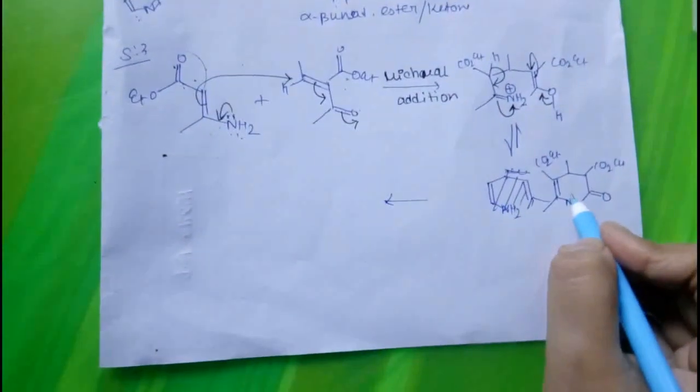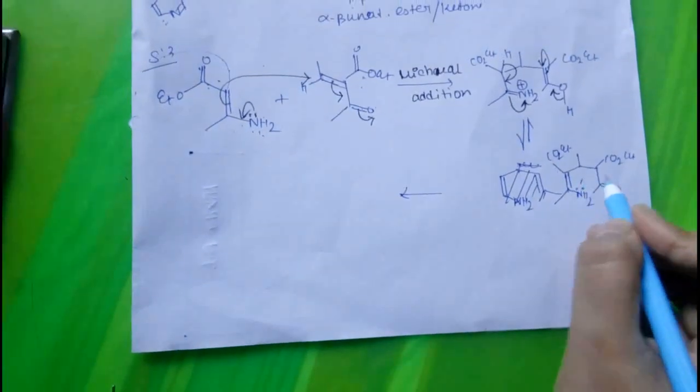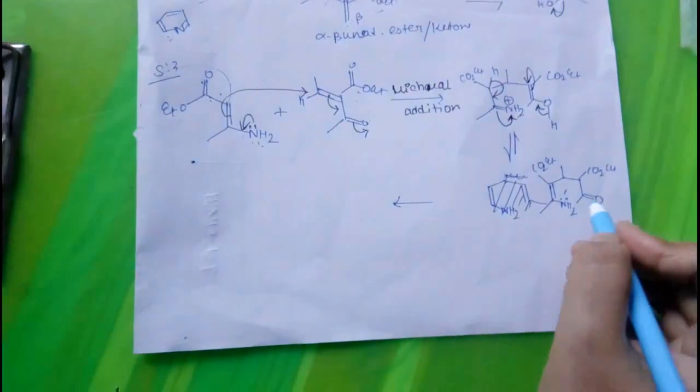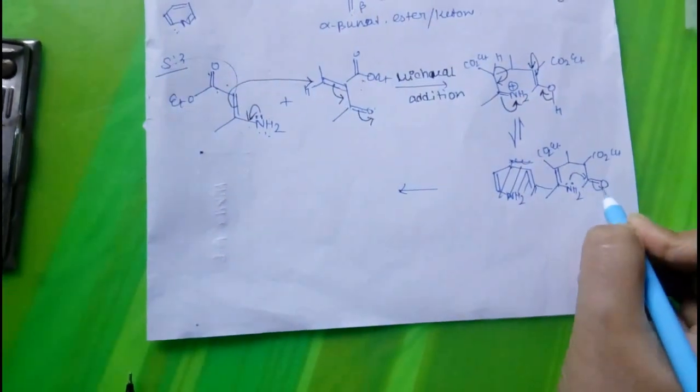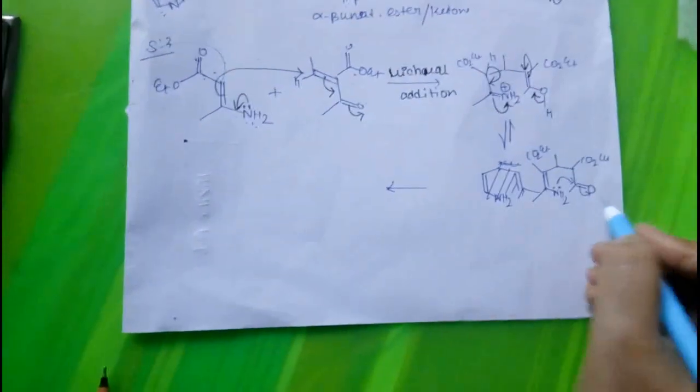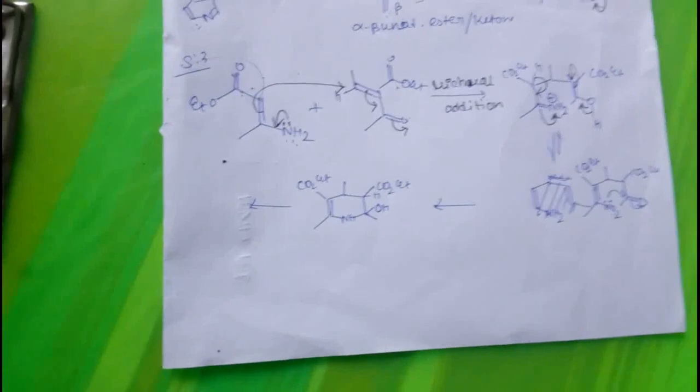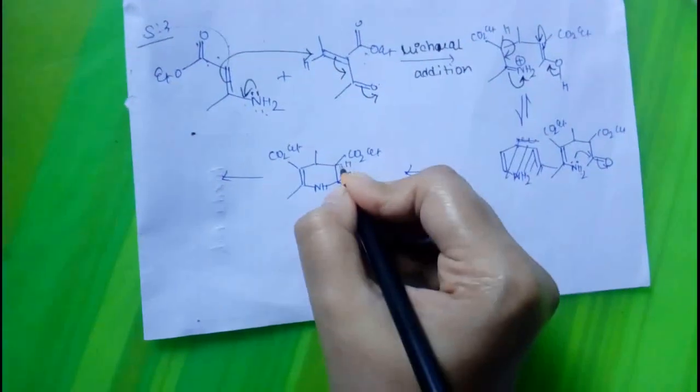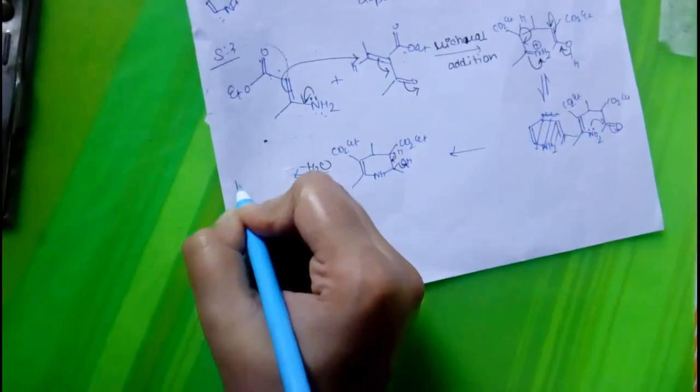The CO2Et group again adds to this position, and it will lose one H plus. This H plus will be captured by this O minus. Again, one H2O molecule will be released and the same thing will occur, and we will get something like this.